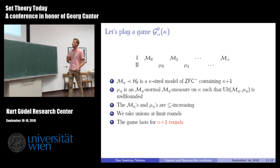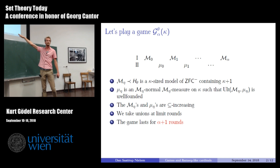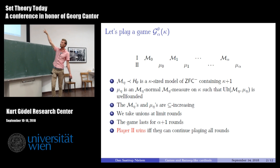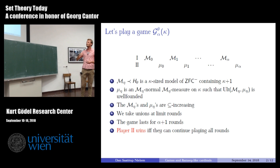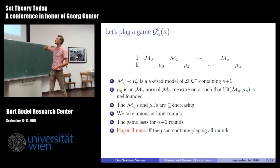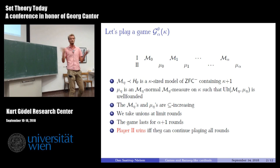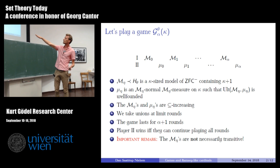We continue playing in this way. α is our last parameter — we play for α+1 many rounds. We have our last model M_α and the corresponding last measure μ_α. Player two wins if and only if they can continue playing all these rounds. The key point is: player one plays a bunch of small models, player two plays a bunch of measures, and the last measure player two plays has a well-founded ultrapower.